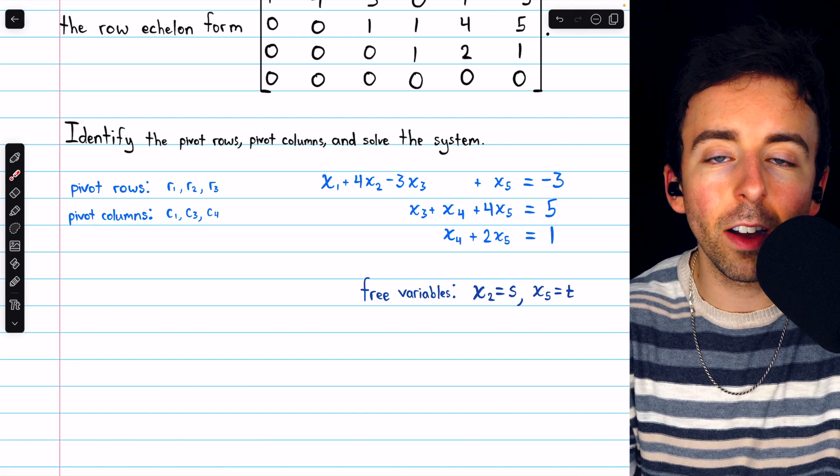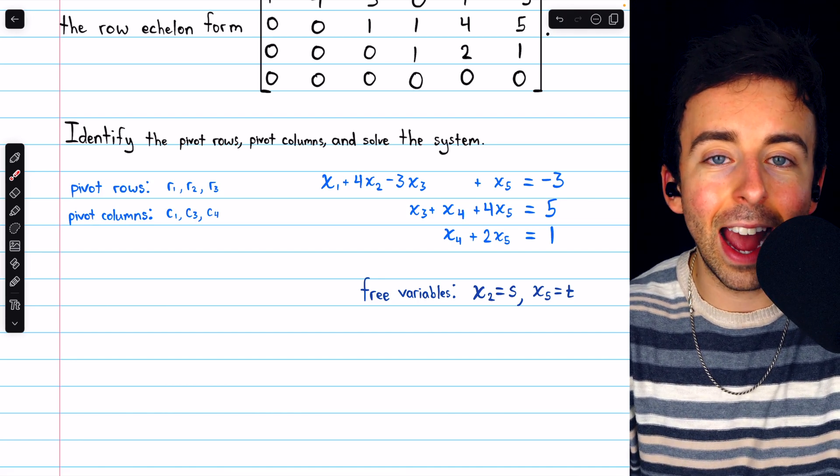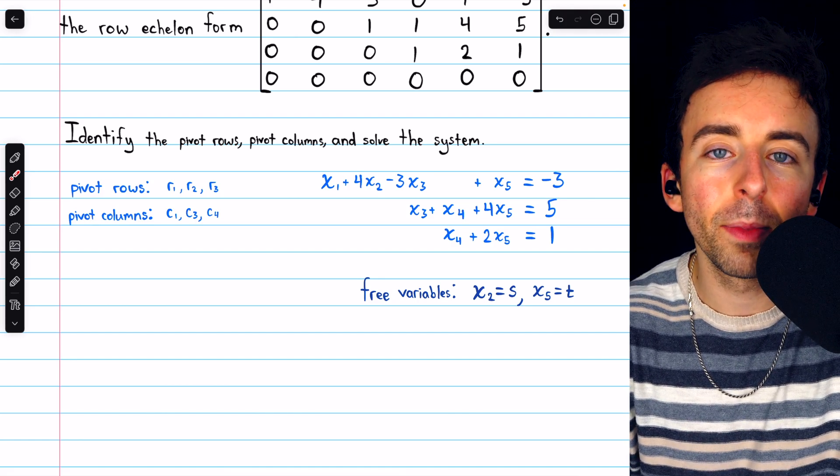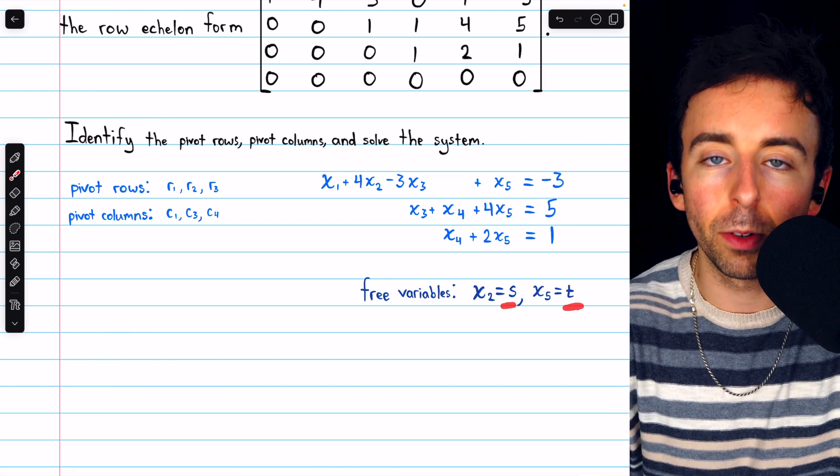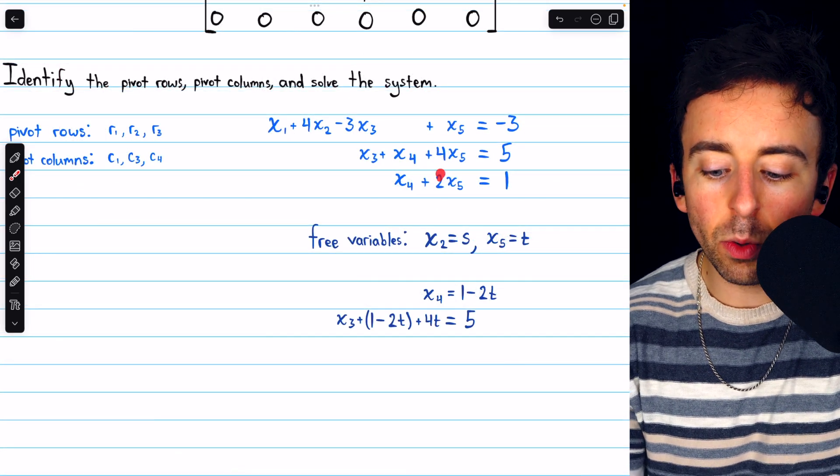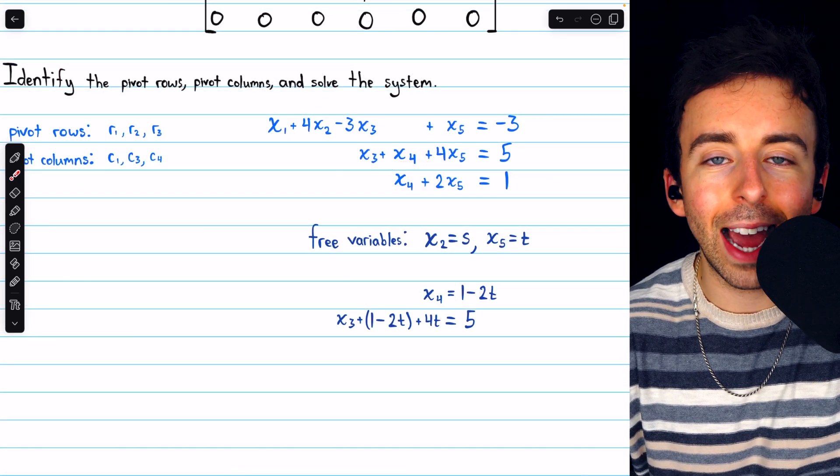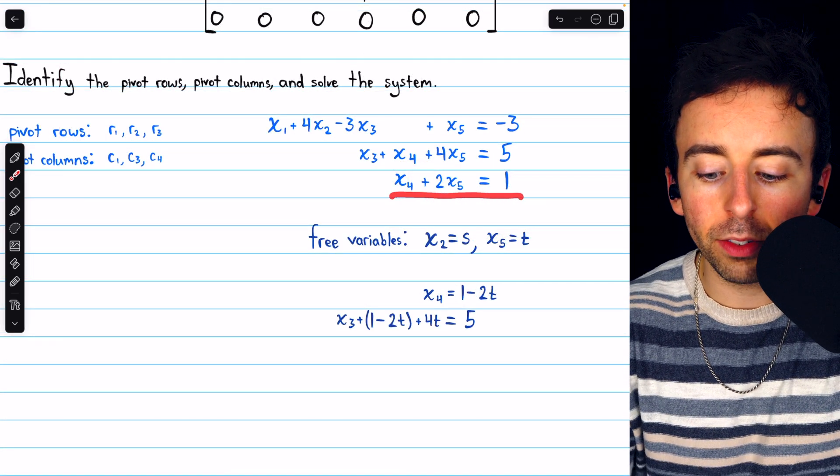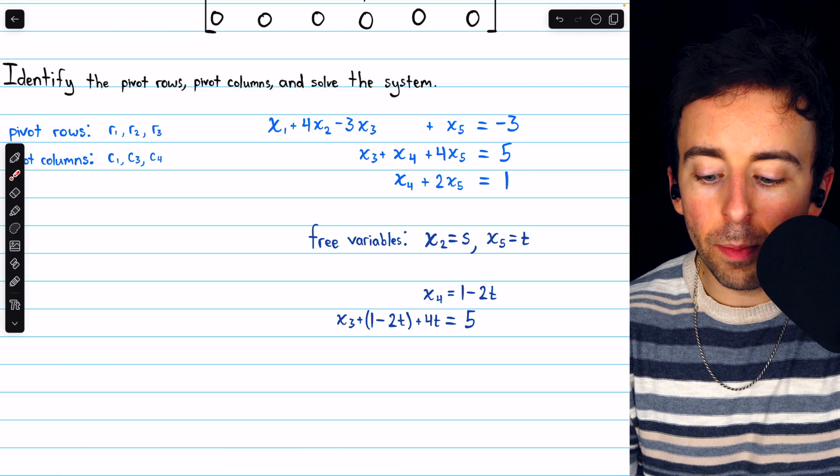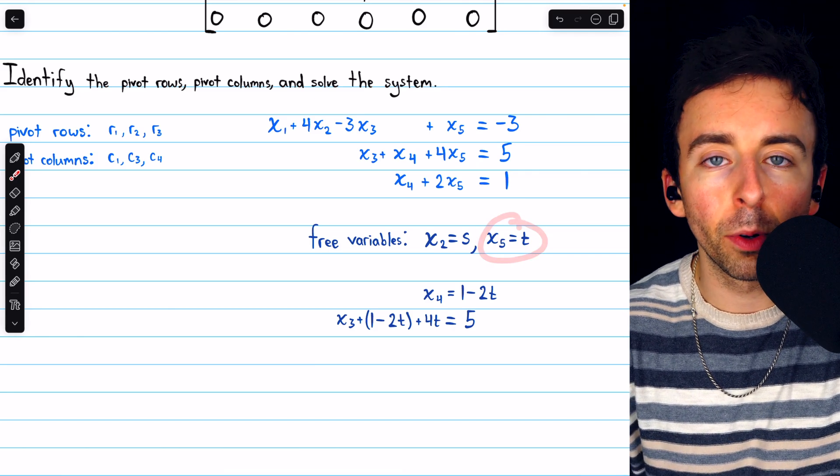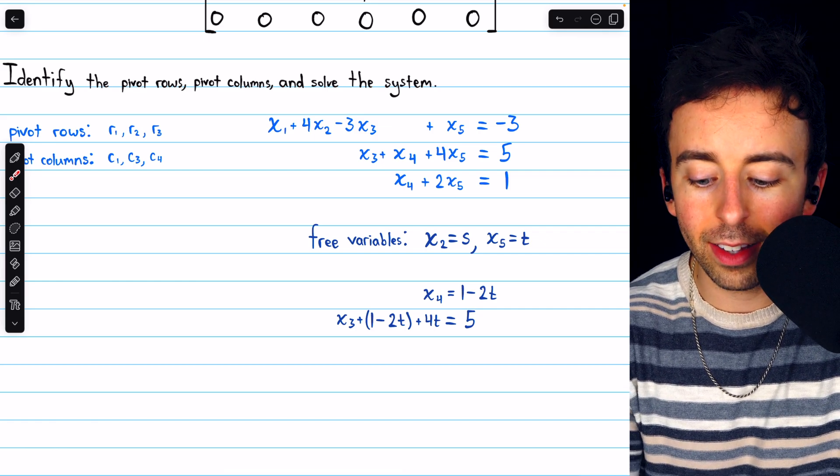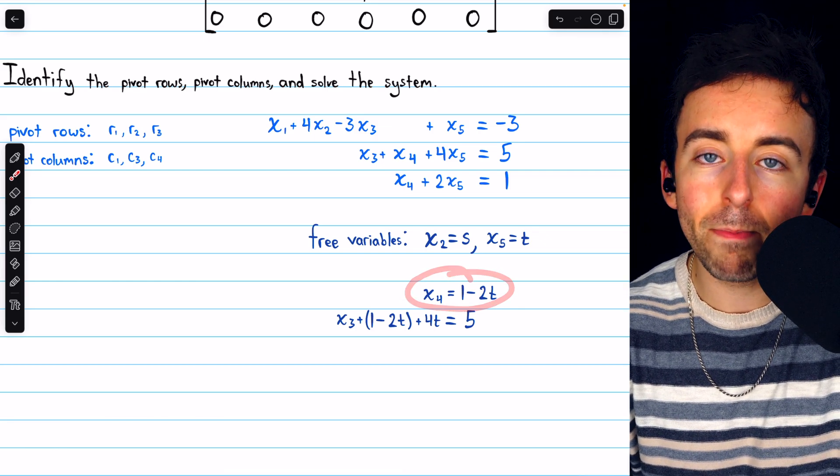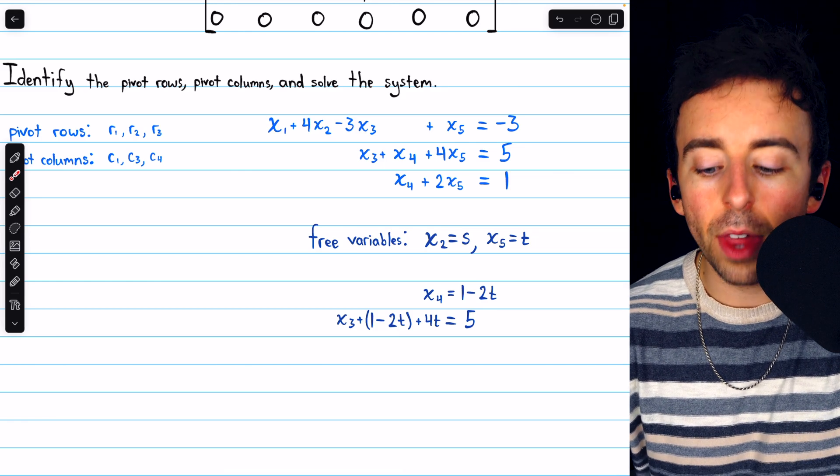These parameters are free to take on whatever values they like. Hence, when we do solve this system, we'll have an infinite set of solutions, described in terms of these parameters s and t. Again, we begin with the equation which comes from the last row. x4 plus 2x5 equals 1, but x5 equals the parameter t. So, subtracting 2x5 from both sides, we have that x4 equals 1 minus 2t.